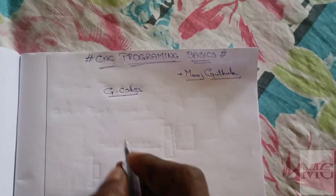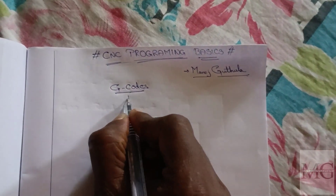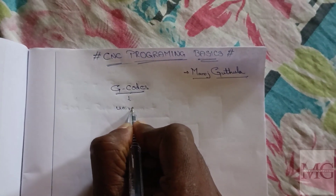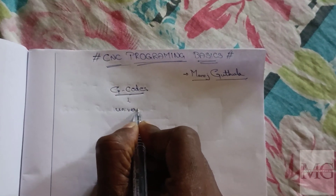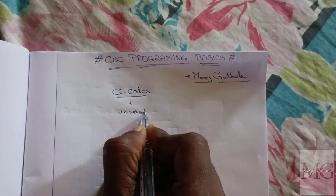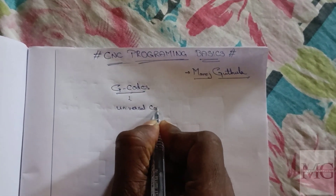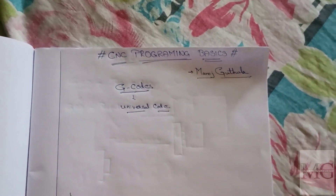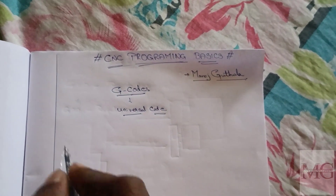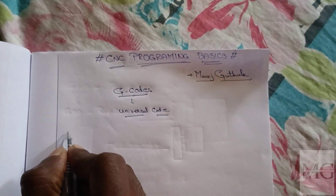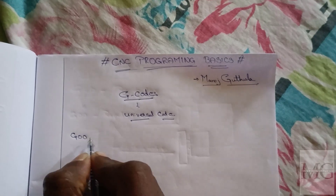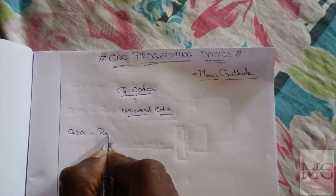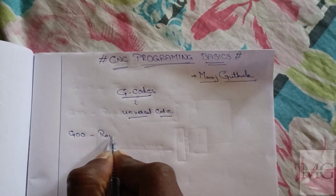G-Codes are called Universal Codes. The first code is G-00, which is Rapid Traverse.